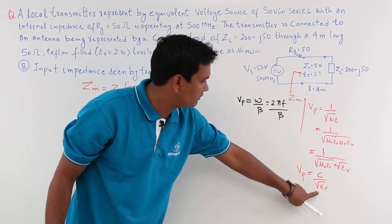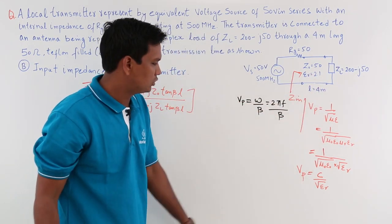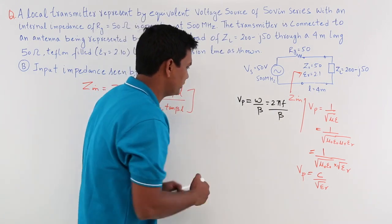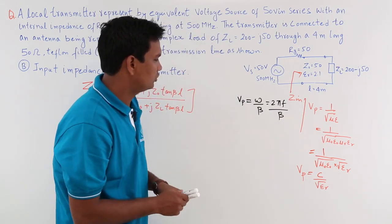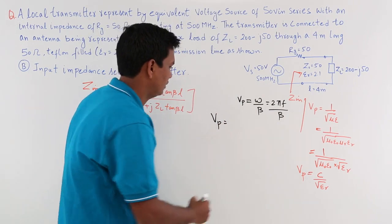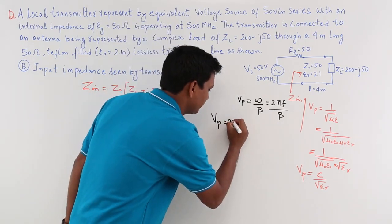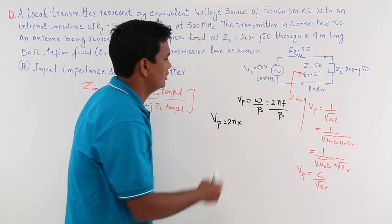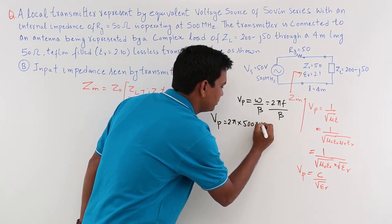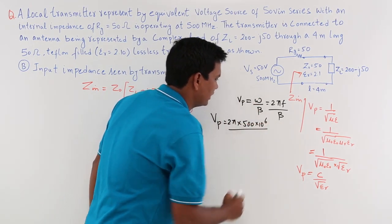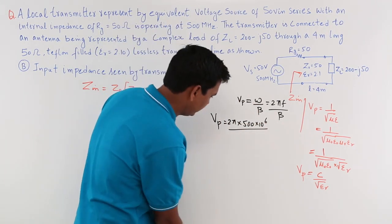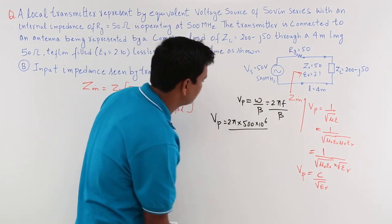ε_r is given to us — it is 2.1. Once we have ε_r we substitute it in. So Vp = C/√(ε_r). And 2πf = 2π × 500 × 10⁶ divided by β. So I have to find β now.